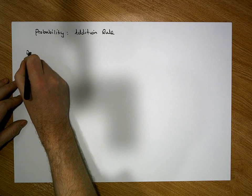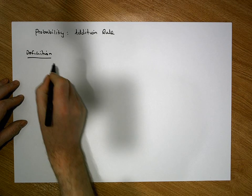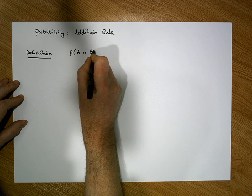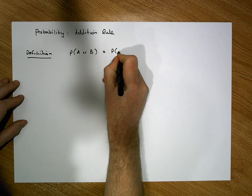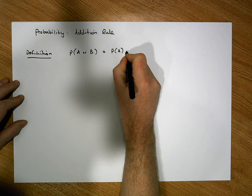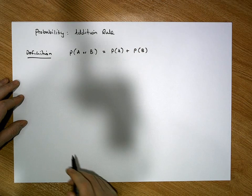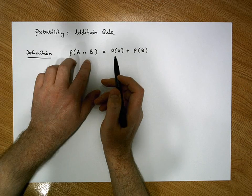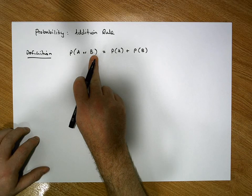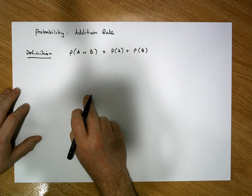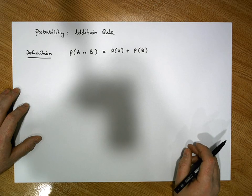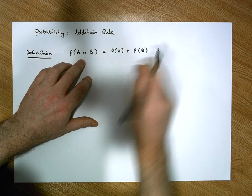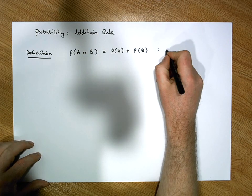So let's define the addition rule. The probability of event A happening or event B happening is simply equal to the sum of the individual probabilities — the probability of A plus the probability of B — when both A and B are mutually exclusive. That means they don't share anything in common; for example, a red card or a black card, a head or a tail, an even number or an odd number. Events with that characteristic are known as mutually exclusive events.